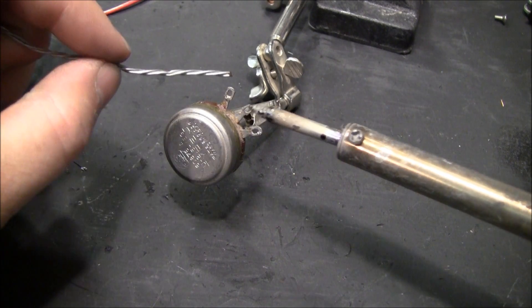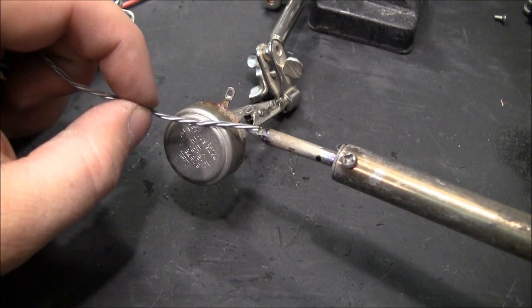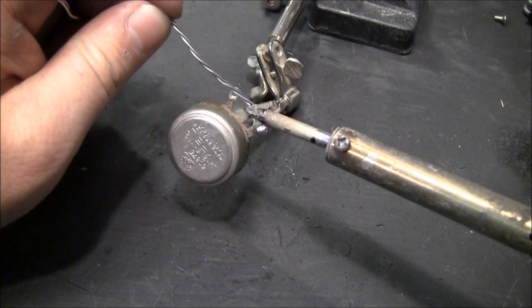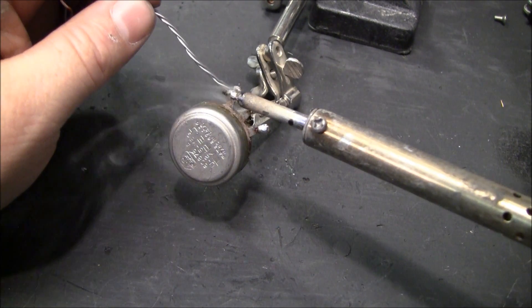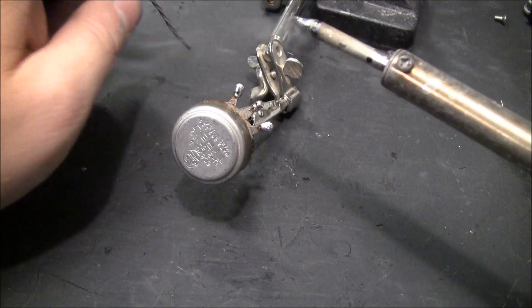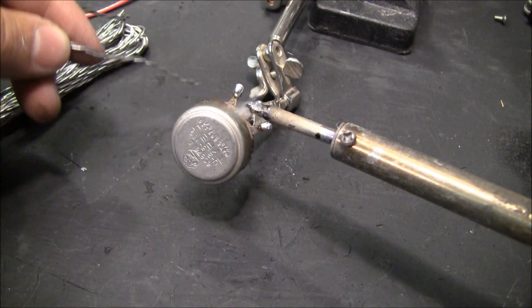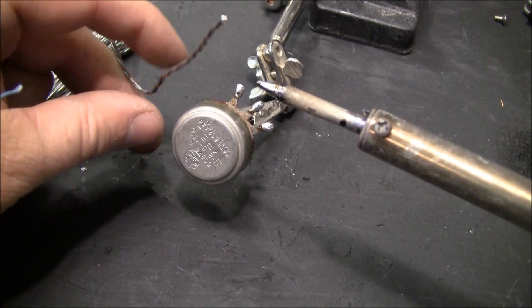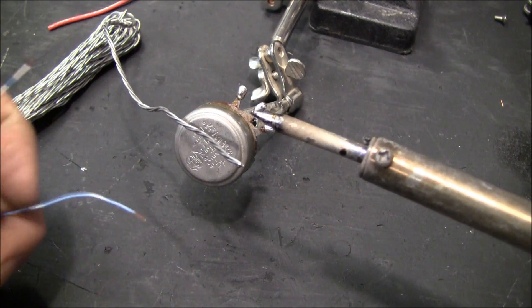Here I'm going to go ahead and prepare the surfaces by tinning them really good with some fresh solder. And you can tell my iron is definitely hot enough to get the solder on there.